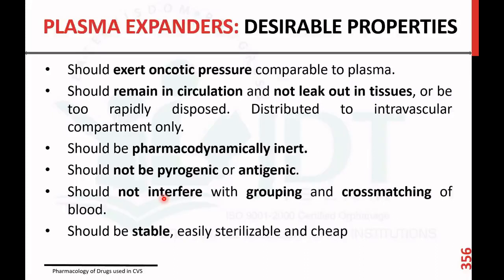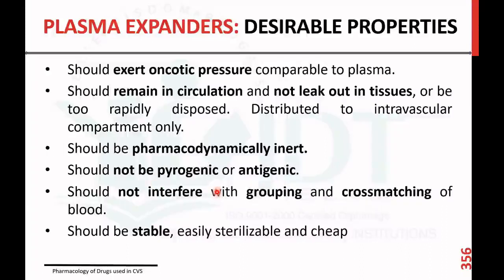What are the desirable properties of a plasma expander? A plasma expander should exert oncotic pressure comparable to plasma. It should remain in circulation and should not leak out into the tissue. It should be distributed to the intravascular compartment only, should be thermodynamically inert, should not be pyrogenic and antigenic, should not interfere with the grouping and cross matching of blood, should be stable and easily sterilizable, and it should be cheap and pharmacodynamically inert.